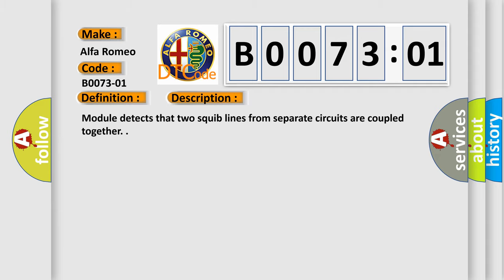And now this is a short description of this DTC code. Module detects that two squib lines from separate circuits are coupled together.